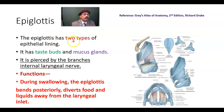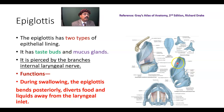The epiglottis has two types of epithelial lining. Anteriorly, because it is just behind the pharyngeal part of the tongue — the root of the tongue — this part is lined by stratified squamous epithelium. The posterior aspect is lined by pseudostratified ciliated columnar epithelium, or respiratory epithelium.